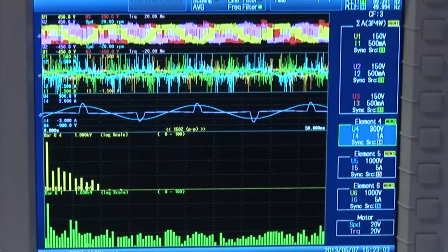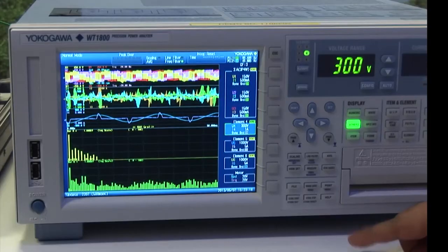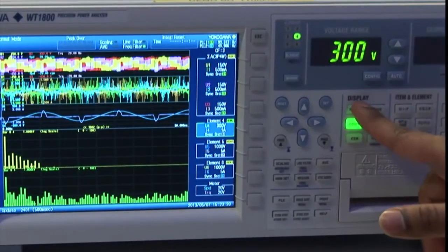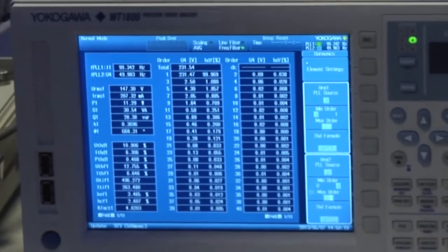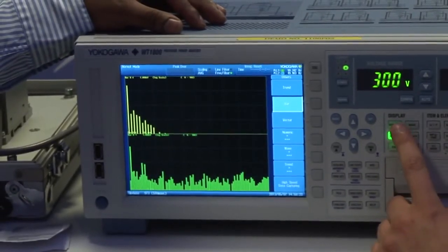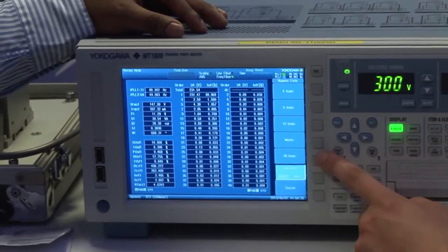In order to minimise the harmonics and increase the power quality, it is important to measure the input and the output harmonic components of the converter. The WT1800's dual harmonic measurement option provides the ability to measure both input and output harmonics simultaneously in one instrument.